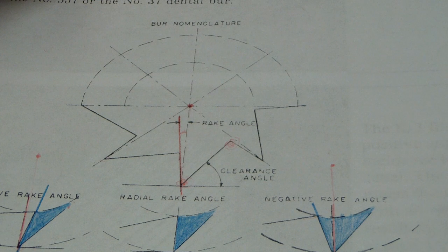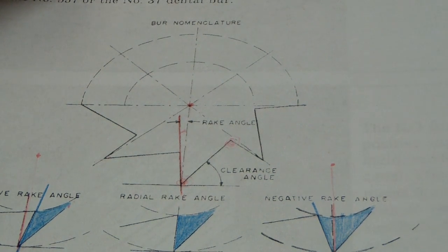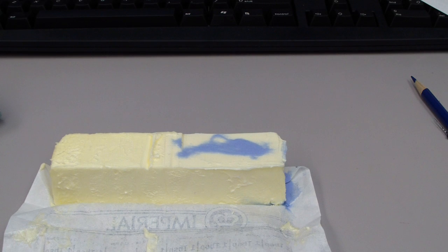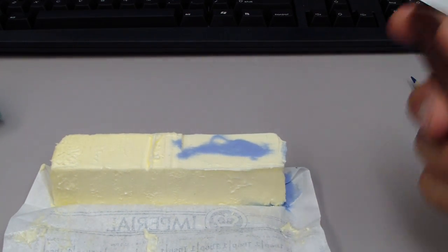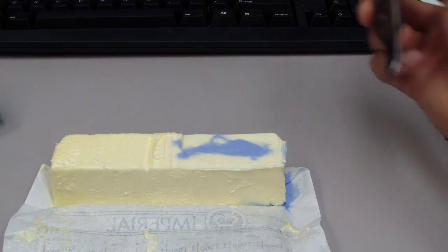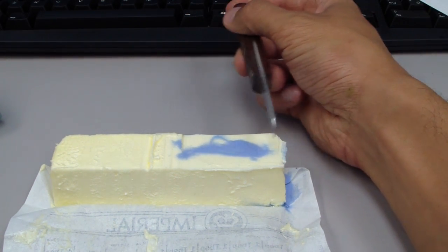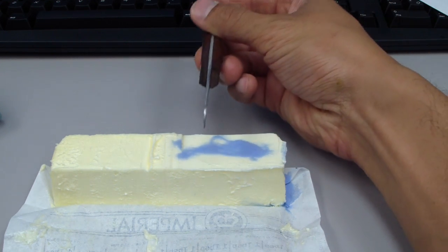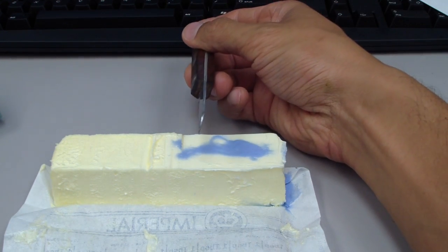So let me just use some butter to describe how those work. Okay, so I'm going to use this butter. I read this online. I have the link up. A great way of just demonstrating positive versus negative rake angle. So imagine this is my material and this is my burr or endo file. So let's talk about a negative rake angle.